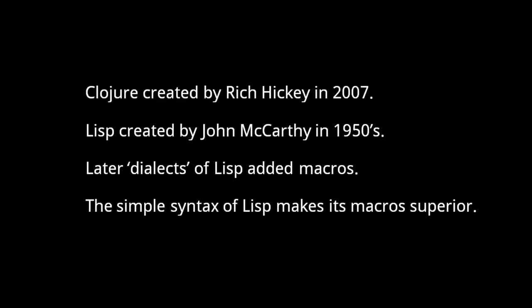The C language preprocessor, for example, has macros, but thanks to the complex nature of C syntax, macros in C are tricky to write, not very flexible, and can easily produce broken code. In contrast, Lisp syntax is extremely simple, making macros in Lisp easy to write, quite flexible, and unlikely to introduce mystifying errors. So that's the first appealing thing about Clojure — like other modern dialects of Lisp, Clojure has a powerful macro system unlike anything found in non-Lisp languages.